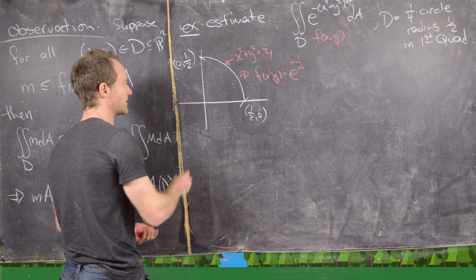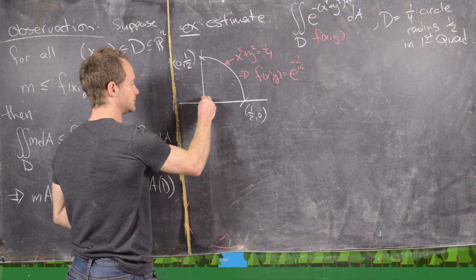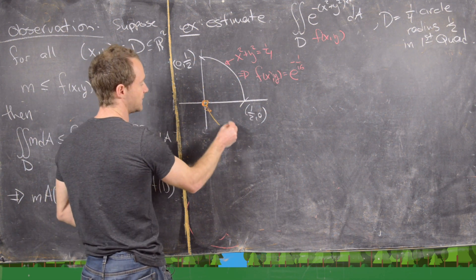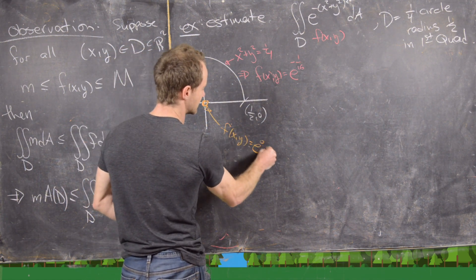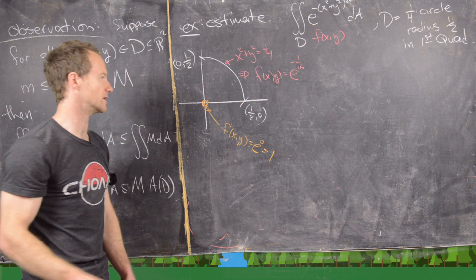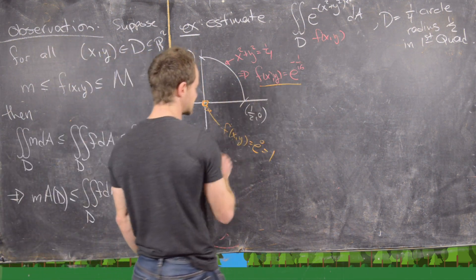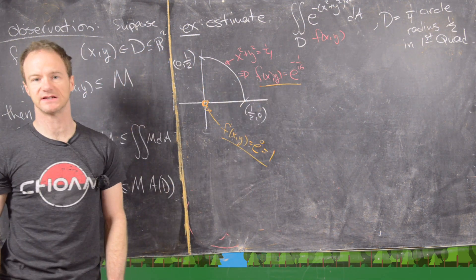And then notice back here at the origin, our function is equal to e^0, which is one. Good. So here we have e^(-1/16). Here we have e^0.